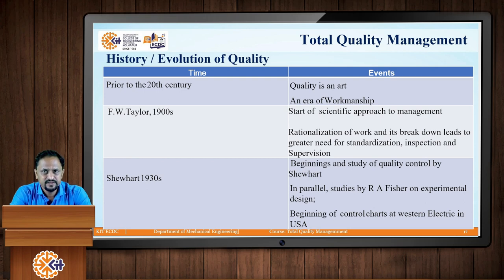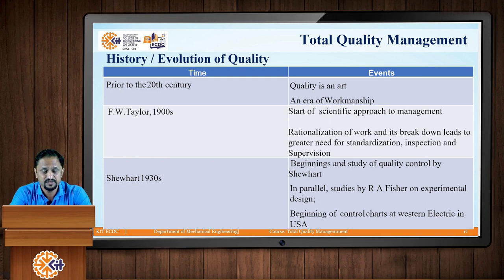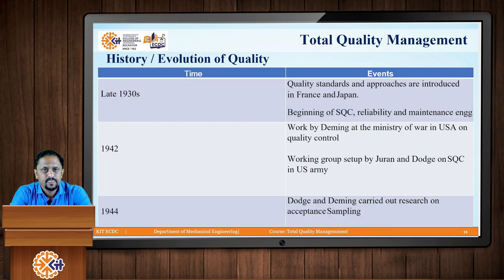In the 1930s, we see the beginning of the study of quality control by Shewhart. Shewhart evolved the concept of quality control. Parallelly, there were studies by R.A. Fisher on experimental design, meaning design based on experimentation. Also, control charts began at the Western Electric Company in the USA, which played a vital role in further quality development. In late 1930s, quality standards and approaches were introduced in France and Japan, and concepts of statistical quality control, reliability, and maintenance engineering were evolved.